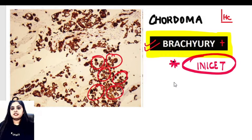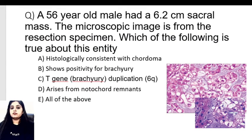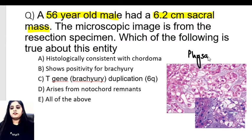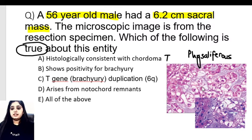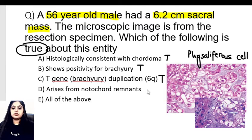This is something you can expect in the INICET, so let's attempt a related question. For example: a 56-year-old male patient presents with a 6.2 centimeter sacral mass, and the images classically show physaliferous cells — cells with bubbly cytoplasm. Which of the following is true about this entity? Is it histologically consistent with chordoma? Yes — physaliferous cells confirm that. Can it show positivity for brachyury? Yes. Does it show brachyury gene involvement? Correct. Does it arise from notochordal remnants? Yes. So all of the statements are true about this entity.